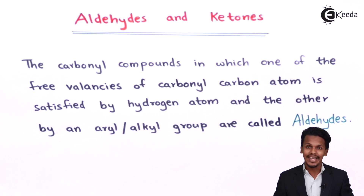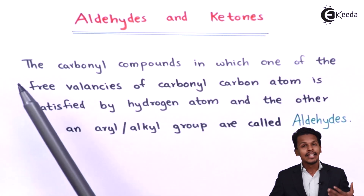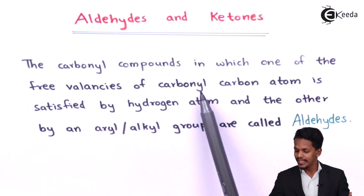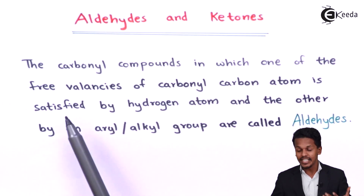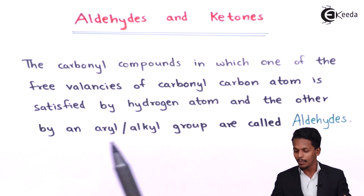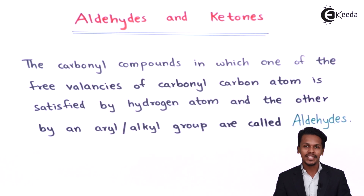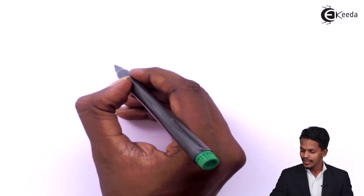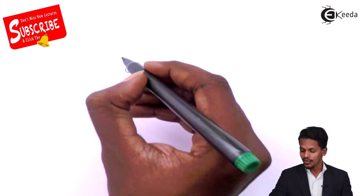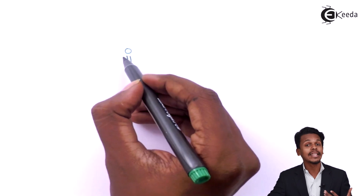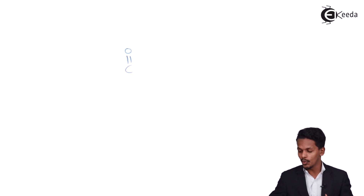So now let us talk about aldehydes first. The carbonyl compounds in which one of the free valencies of the carbonyl carbon atom is satisfied by hydrogen and the other by an aryl or alkyl group are called aldehydes. So let me explain this. We know that carbon consists of four valencies, out of which two are occupied by the double bond to oxygen.